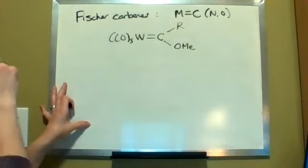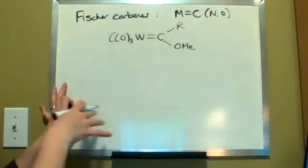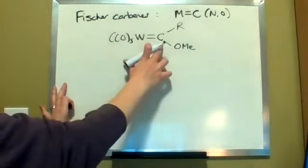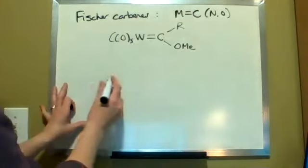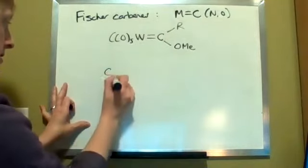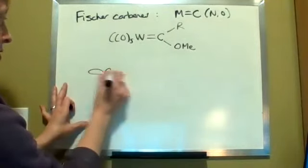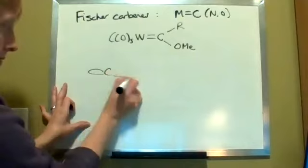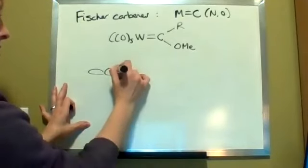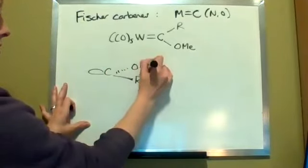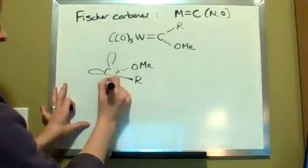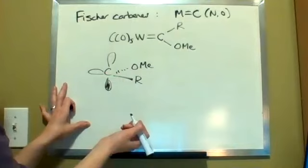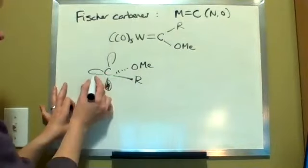Now in a Fischer carbene, this carbon here is sp2 but it's a singlet sp2 species. So if we were to look at bonding here, so sp2 there, and then we have our R group, our methoxy species back there, and then you have this pz orbital as well, so this would be your sp2s.